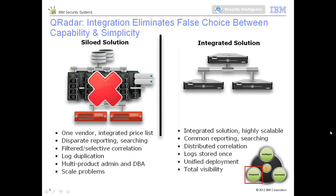One good thing about QRadar is that it's not a siloed environment — it's an all-in-one integrated solution. It also has a proper distributed architecture. For example, let's say an organization has one data center in Bangalore and another in Chennai. There's a QRadar appliance in Chennai looking at all the events and packets of data flowing on the wire, and another QRadar appliance in Bangalore looking at all the events generated by servers, routers, switches, and firewalls, as well as all the packets of data flowing within that Bangalore data center. All these are locally correlated and stored locally.